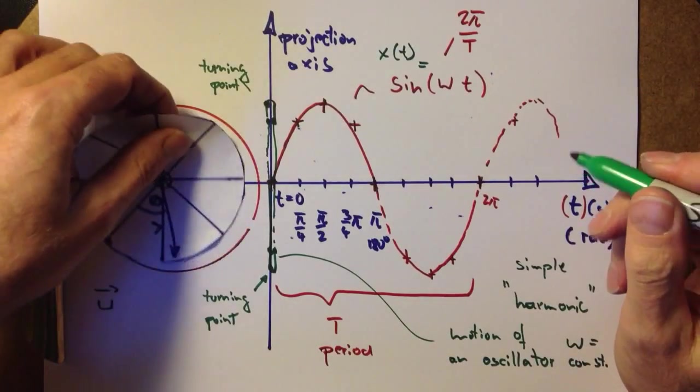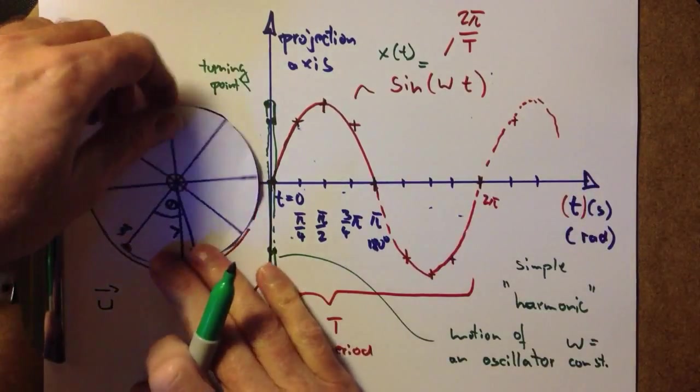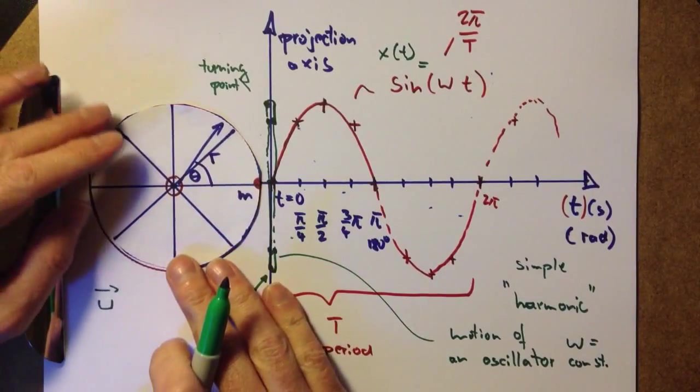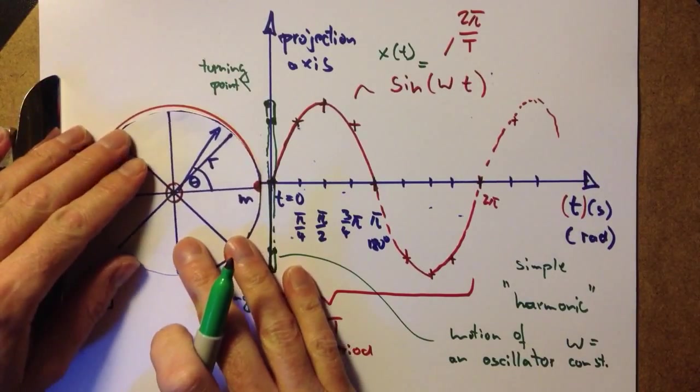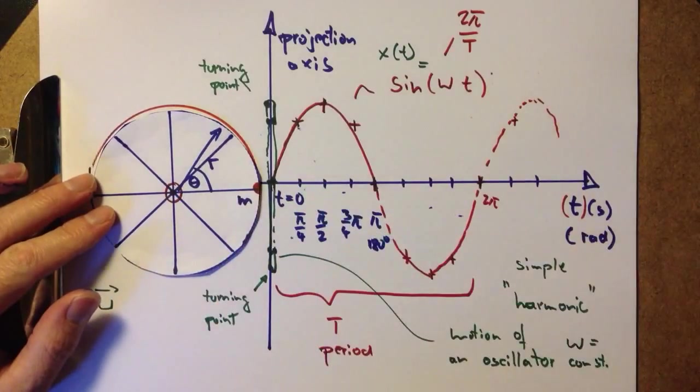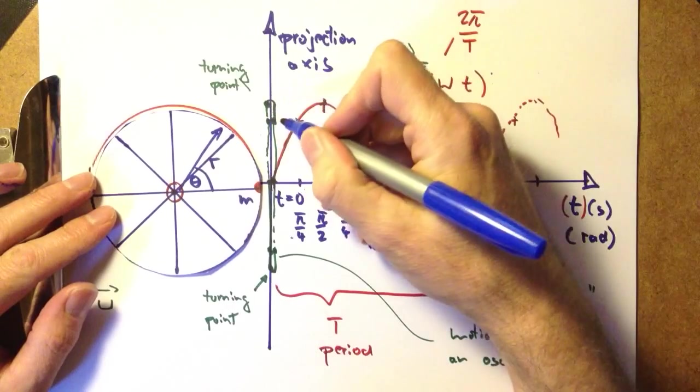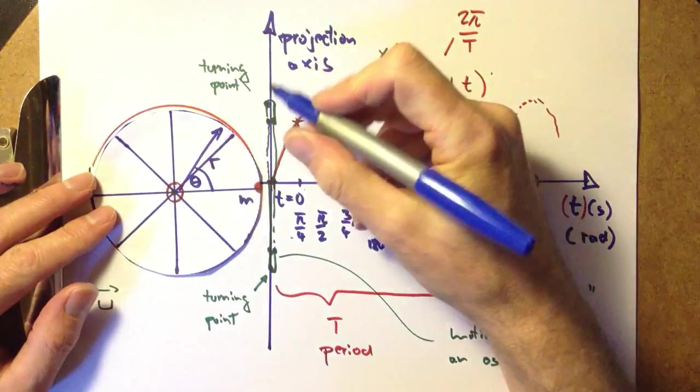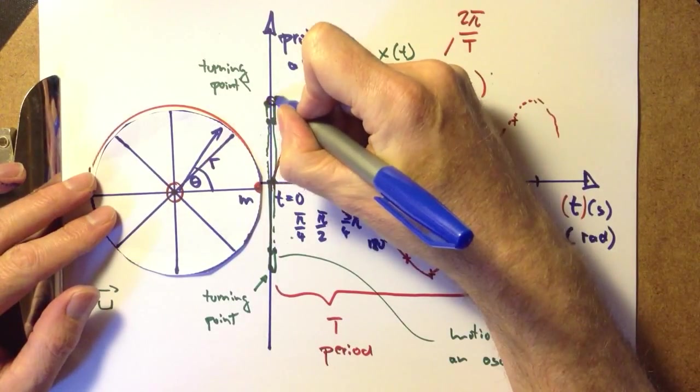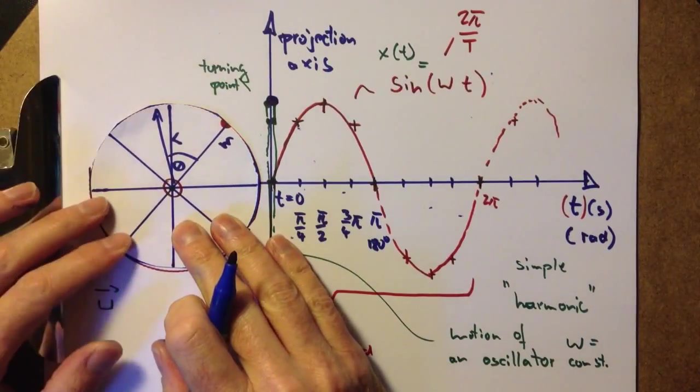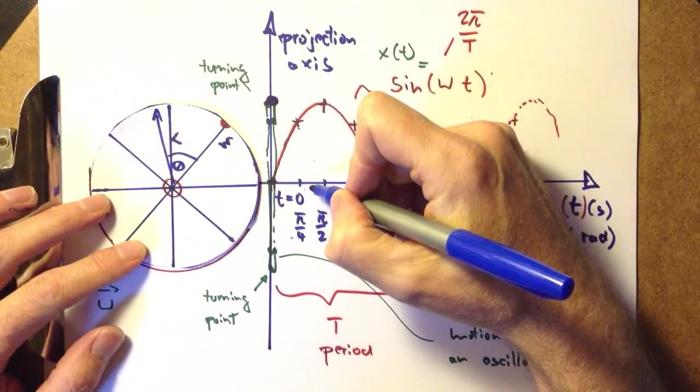Now let's go one step further and see what happens to the speed. When the point mass is at this point in time, the speed is rather large because we're moving upward towards the first turning point. So we need to indicate a large positive speed, which we might do in blue. Then we're moving 45 degrees.